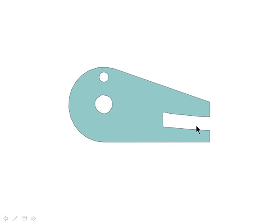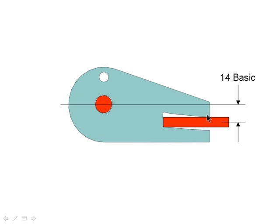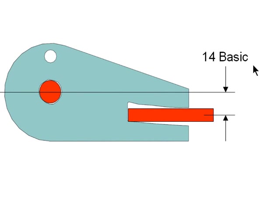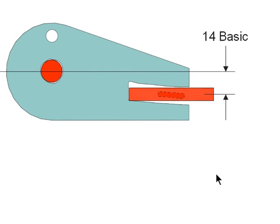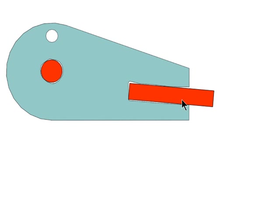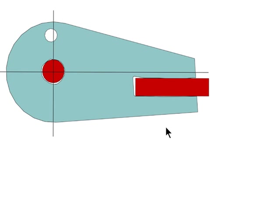The slot was picked as a secondary datum feature. There are two ways to use it to orient the planes. One way is to locate the center plane of parallel planes at the 14 basic dimensions seen on the drawing, then have those planes expand to fill the slot. The second way would be to fill the slot and then rotate to orient the datum planes parallel to the center plane of the slot.